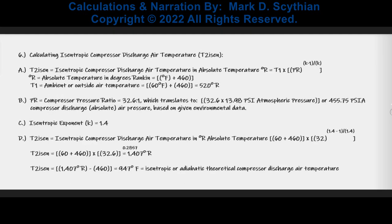Next, we compute the isentropic compressor discharge air temperature — the minimum theoretical value. Upon doing so, 947 degrees Fahrenheit is calculated.